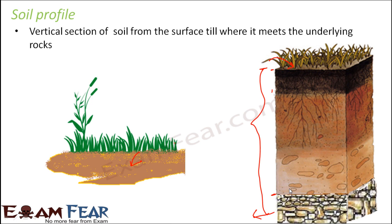The soil constituents are organized into distinct layers. On what basis have they been put into different layers? The materials which form soil are physically and chemically different from each other, so based on their physical and chemical properties they have been organized into these layers.